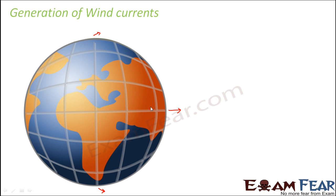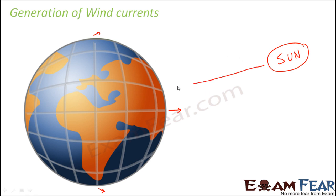Different regions of the earth receive different amounts of sunlight because of the shape of the earth. The earth is approximately a sphere, so if the sun is situated here, the center part of the earth — the regions near the equator — might be receiving more light compared to the poles.